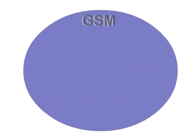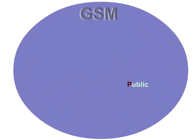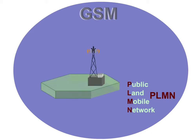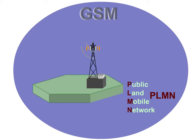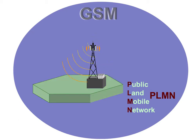In GSM, the Public Land Mobile Network (PLMN) is a cellular network with a hierarchical structure. The smallest unit is the radio cell, which the BTS supplies with frequencies, or in other words, radio channels. It provides the network coverage.